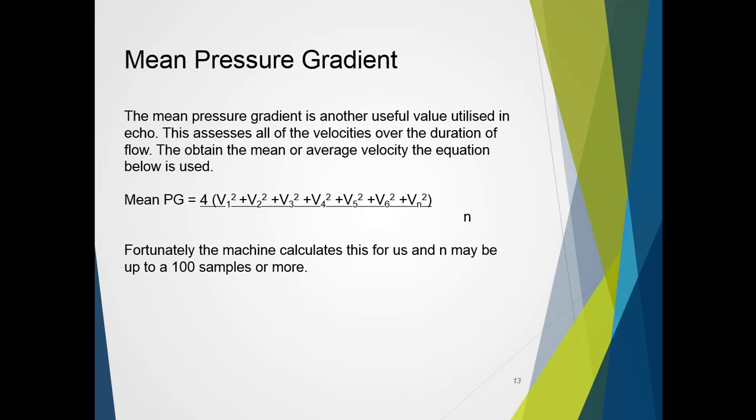The mean pressure gradient is another useful method that we utilize in echo that we can use to assess stenotic lesions. Basically, we work with the formula where the mean pressure gradient is 4 times all the velocities that we measure under a curve. So, V1 through all the way to N, and then divide by N, the number of samples. So, these number of samples can be up to about 100 or more, but fortunately, the machine works this all out for us.